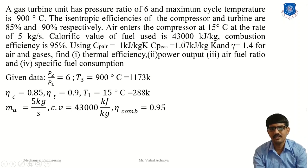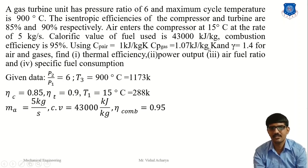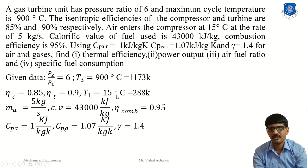The fuel calorific value is 43,000 kJ/kg. The combustion efficiency is 95%. Cp for air is 1 kJ/kg·K and Cp for gas is 1.07 kJ/kg·K. The index gamma for the gas is 1.1. We need to find: the thermal efficiency, power output, air-fuel ratio, and specific fuel consumption.